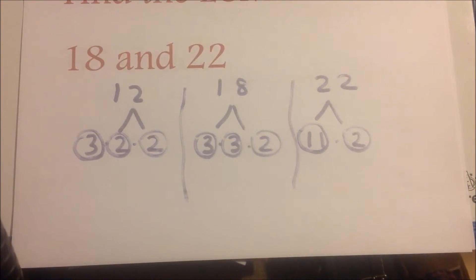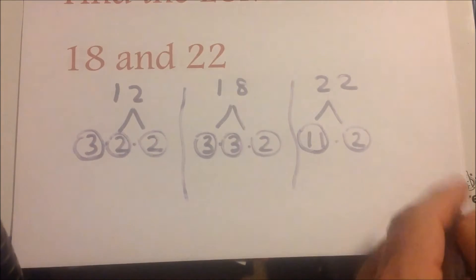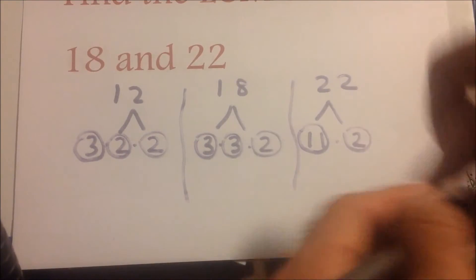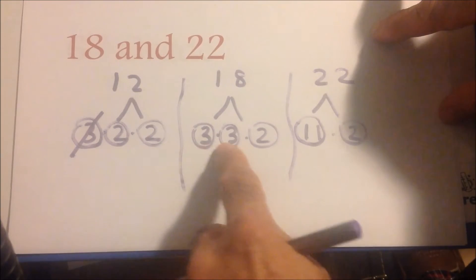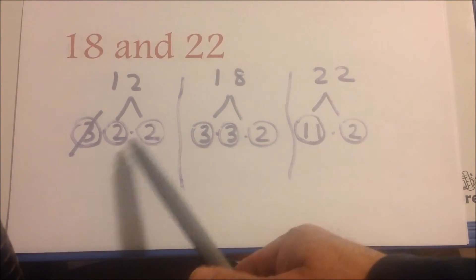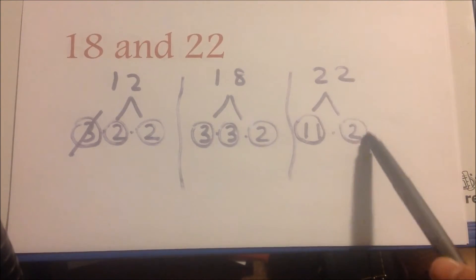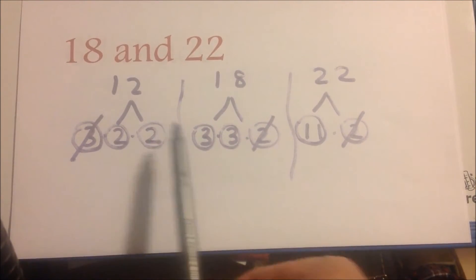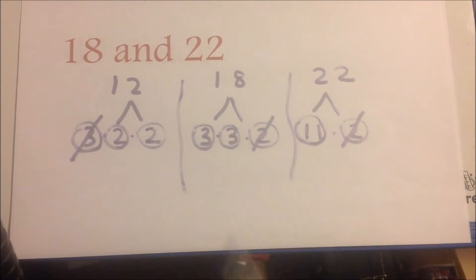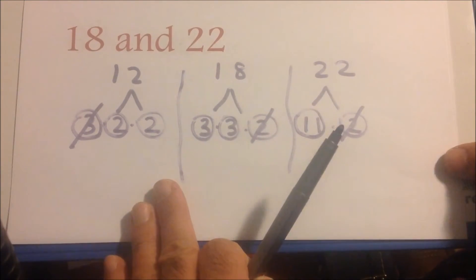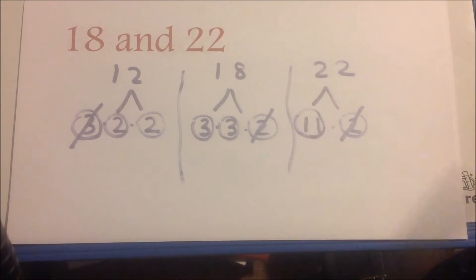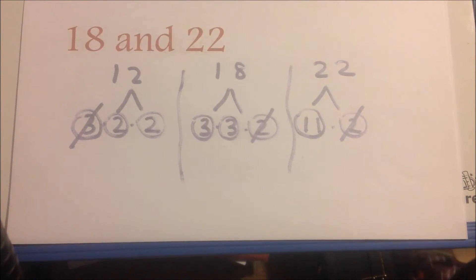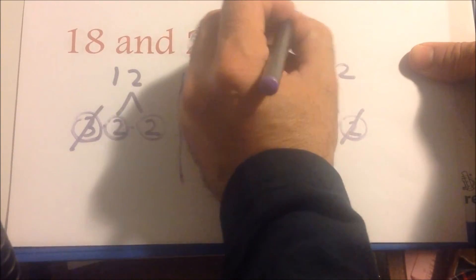With the LCM, we want to know which number has the most of each factor. 12 has one 3, 18 has two 3s — so we keep 18's. 12 has two 2s, 18 and 22 each have one 2 — so we keep the two 2s. We're left with two 2s, two 3s, and an 11. Multiply: 11 times 9 times 4 gives us the LCM of 396.